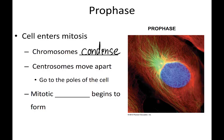Centrosomes, which are microtubule structures that help coordinate the microtubules in the rest of the cell, start moving to opposite poles of the cell. When we talk about poles of the cell, we simply mean two different ends of a rounded object, much like the North Pole and the South Pole of the Earth are found on different ends of the globe. Another thing that begins to form during prophase is the mitotic spindle, which is made up of microtubules coordinated by the centrosomes, and will play an important role in separating the duplicated chromosomes.